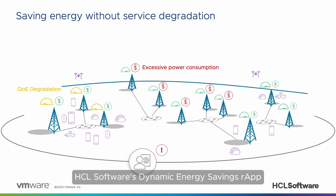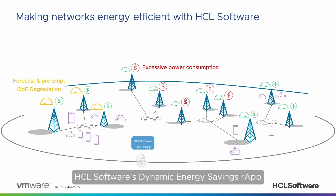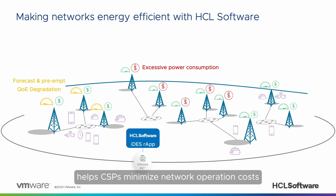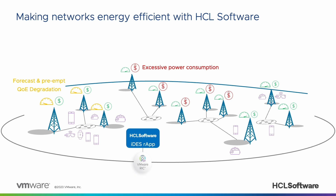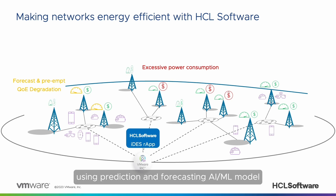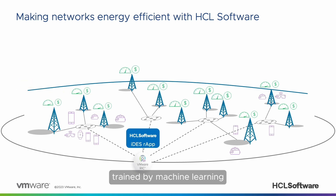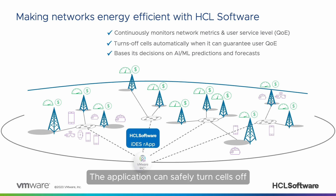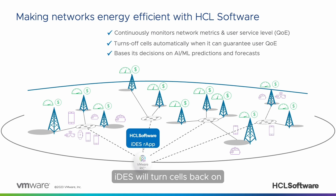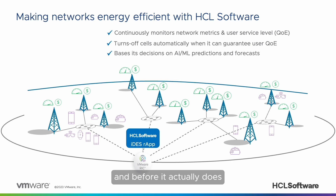But how? HCL Software's Dynamic Energy Savings R-App, called IDES, helps CSPs minimize network operation costs while guaranteeing User-Level Quality of Experience, or QoE. Using a prediction and forecasting AI/ML model trained by machine learning to predict service performance levels and forecast the effects of cell state changes, the application can safely turn cells off to reduce power consumption without compromising the QoE. IDES will turn cells back on when the quality of experience is expected to degrade, and before it actually does.